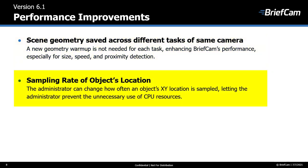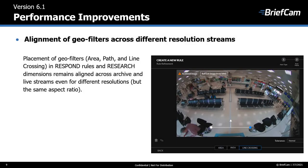We've also made it possible for the administrator to change how often an object's XY location is sampled, which prevents unnecessary use of CPU resources. Additionally, if the archive stream and the live stream use different resolutions, the placement of the geo filters — area, path, and line crossing — set in the respond rules and in research dimensions remains aligned across the archive and live streams. So if I draw this line here, even if the resolution is different, in the archived image this line will remain as is.